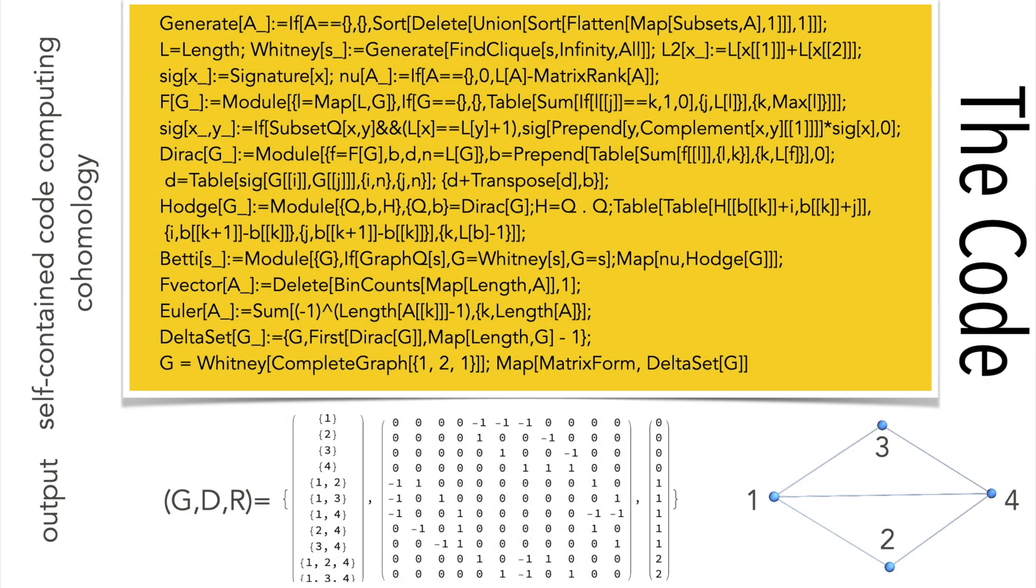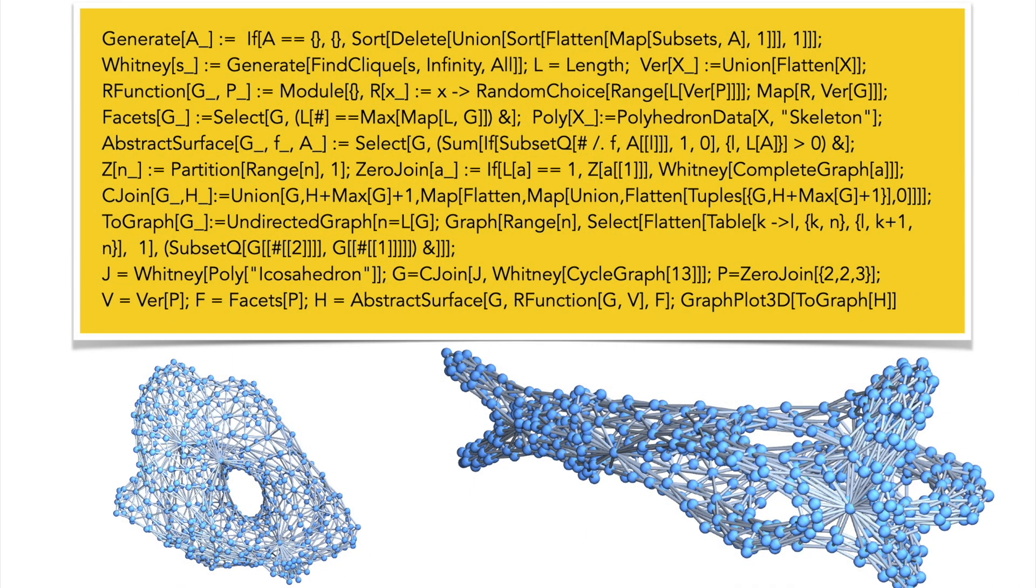Here is an example code which takes a graph as an input and produces the data structure of a delta set. It produces the set of simplices G, a Dirac matrix D, and dimension vector R. Another example is a self-contained code which takes an arbitrary manifold like here a 4-manifold and computes a codimension 2 or codimension k hypersurface. This can be done in arbitrary dimensions.